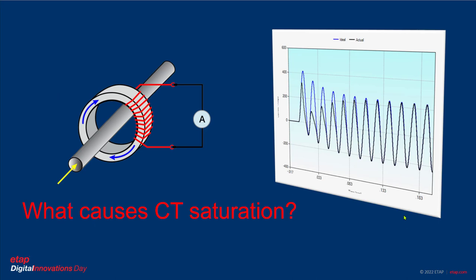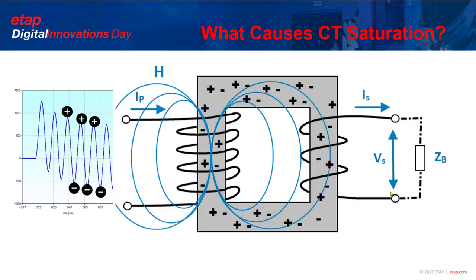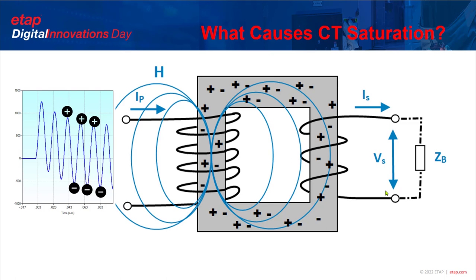In order to understand how and why a CT saturates, we need to understand how it works. CT saturation analysis starts from the molecular composition of the ferromagnetic material used in the current transformer core. Such material is composed of a limited number of magnetic dipoles — like very small magnets — that align back and forth depending on the instantaneous value of the current and the magnetic field generated by that current passing through the primary winding. The alternating current causes an alternating magnetic field, making those dipoles align, producing magnetic flux through the core and secondary winding, inducing the secondary voltage and current based on the burden connected to the CT terminals.